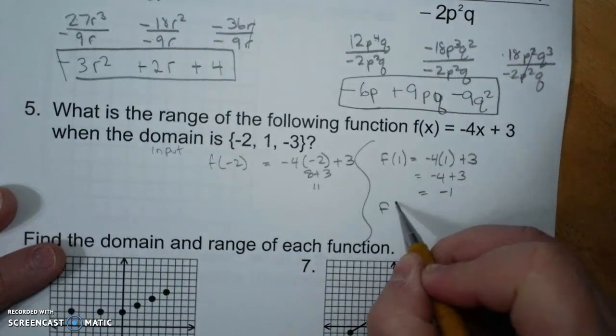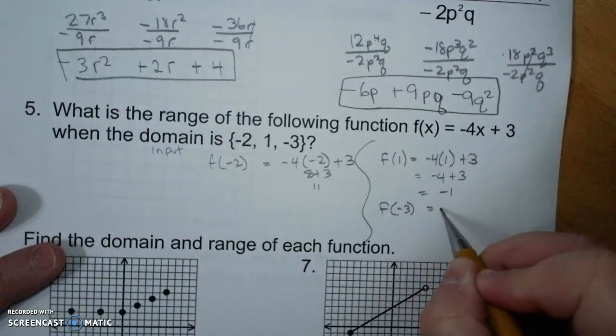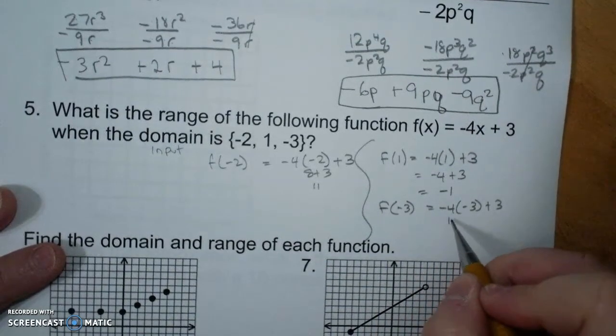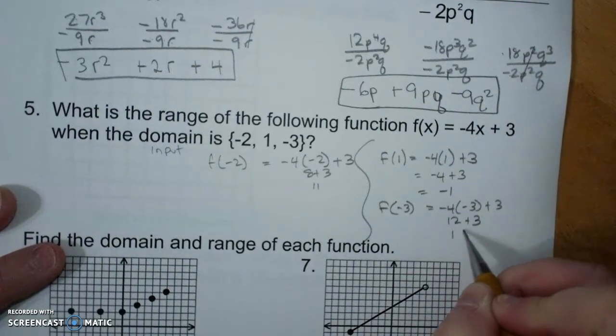F of negative 3 is negative 4 times negative 3 plus 3, which is 12 plus 3, which is 15.